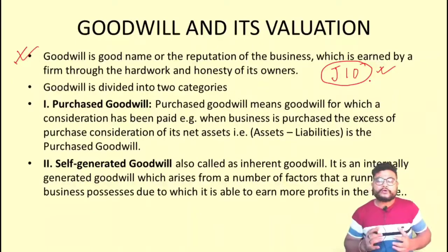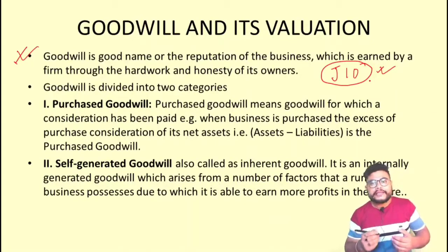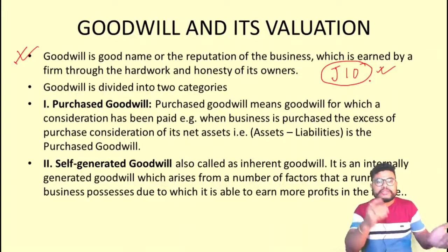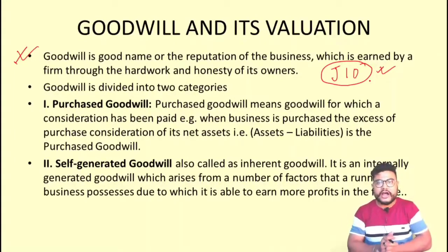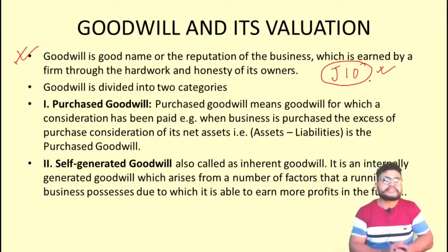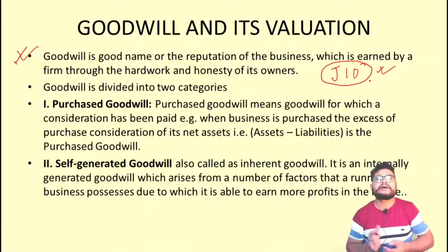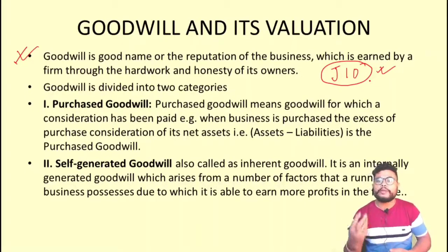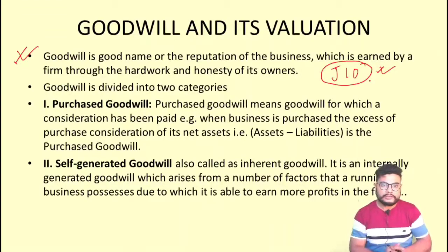Goodwill is of two types: purchased goodwill and self-generated goodwill. Purchased goodwill is any amount paid more than the purchase consideration — the excess payment over the net assets (assets minus liabilities) when a business is purchased is called purchased goodwill.